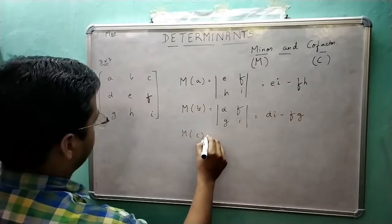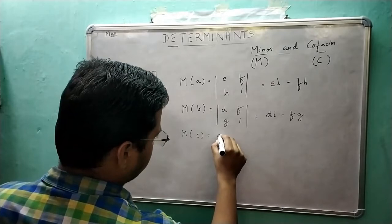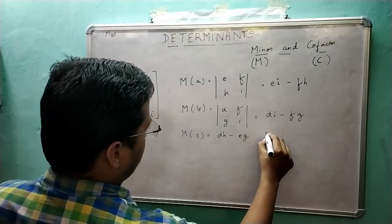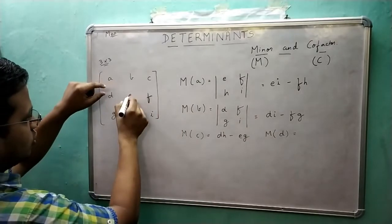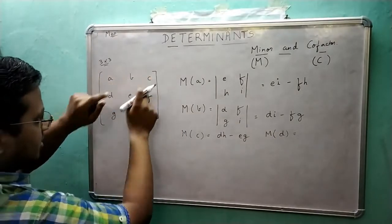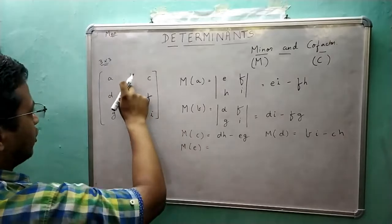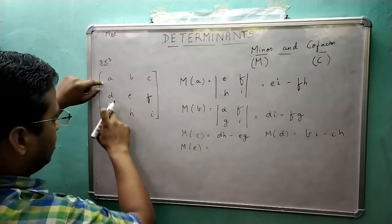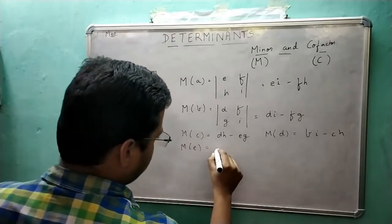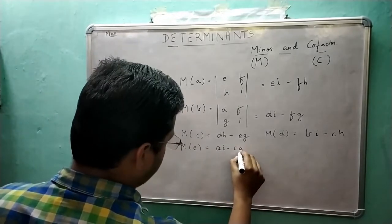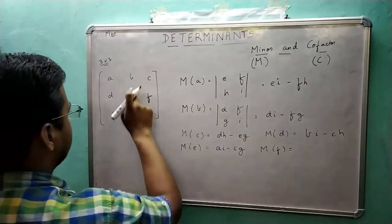Similarly, the minor of C will be: forget the corresponding row and column, leaving elements D, E, G, H — so D×H minus E×G. The minor of E will be, forgetting the column and row containing E, the determinant of the leftovers: A×I minus C×G. The minor of F will be A×H minus B×G.